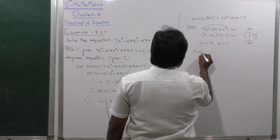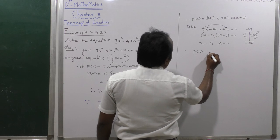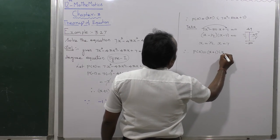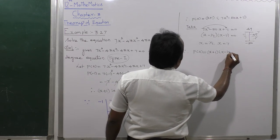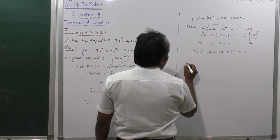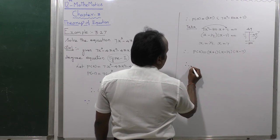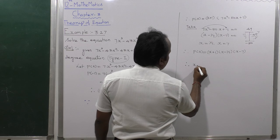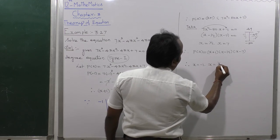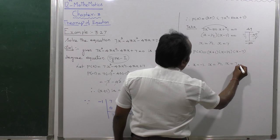Therefore, P(x) = (x + 1)(x - 1/7)(x - 7). The solutions to the equation are x = -1, x = 1/7, and x = 7.